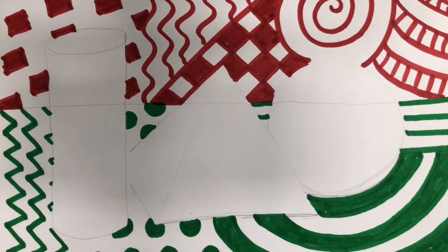After you have drawn all your patterns in the background the next step is to add some value and you want to make sure that the light source is coming from the same direction on all of your pieces.